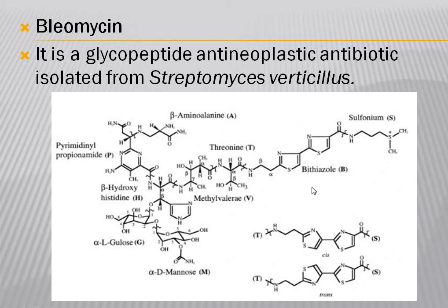The fourth domain is the sugar domain, consisting of two carbohydrate moieties: alpha-L-glucose and alpha-D-mannose. The difference between bleomycin A2 and B2 lies in the R group within the DNA binding domain. For A2, R is -NH-CH2-(S(CH3)2) (a sulfonium group), and for B2, R is -NH-(CH2)4-NH-C(=NH)-NH2 (a guanidinium group).